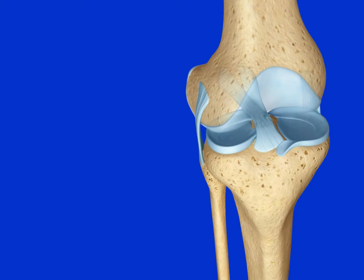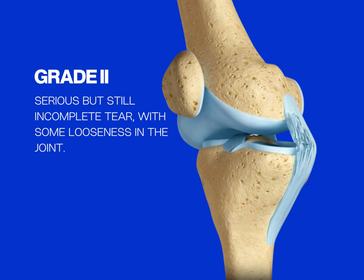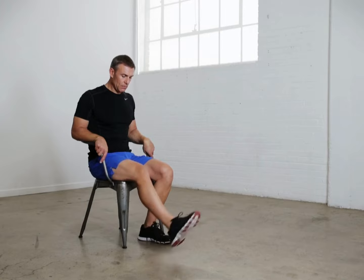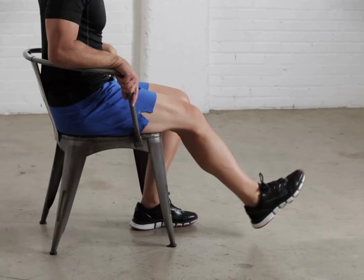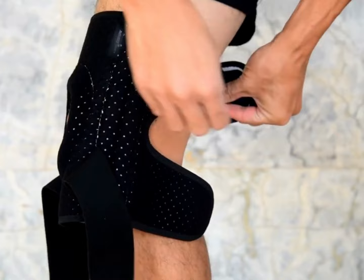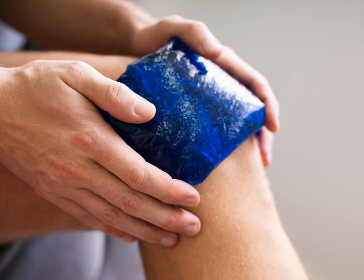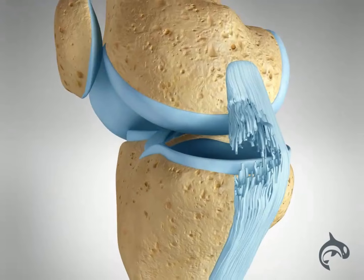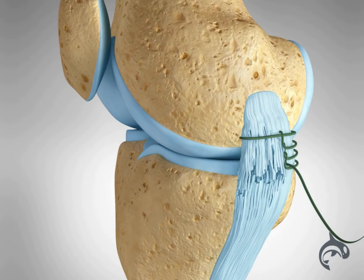Treatment will be determined by the grade of tear: grade 1 being a minor tear, grade 2 a partial tear, and grade 3 a complete tear or rupture of the ligament. Treatment options may include muscle strengthening exercises, protective knee braces for use during exercise, ice pack application to reduce swelling, or for severe injuries, surgery.